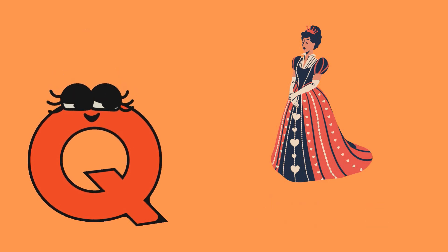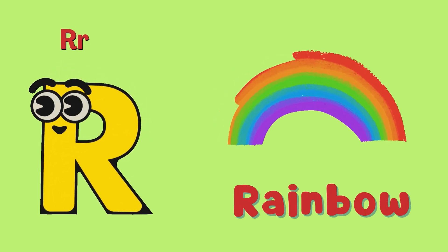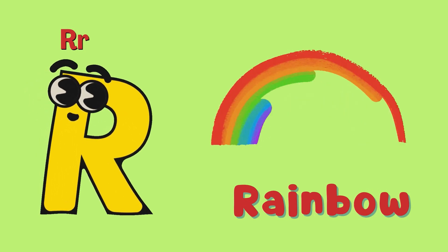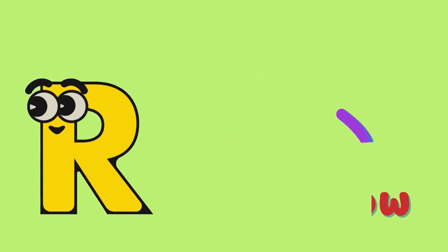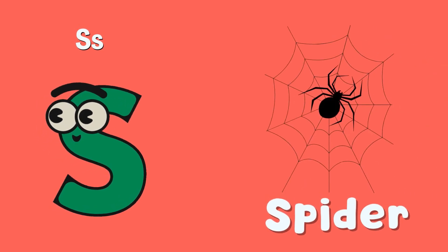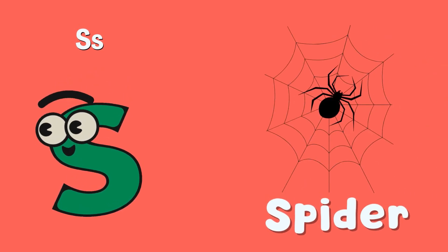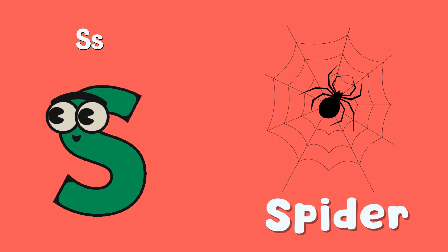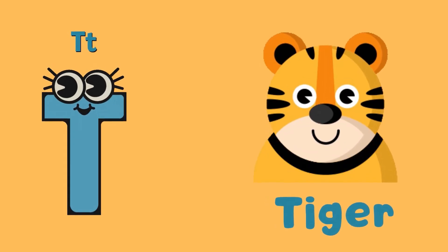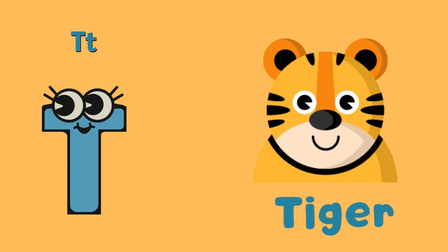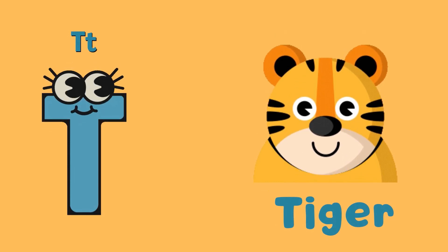R is for Rainbow. R-R-Rainbow. S is for Spider. S-S-Spider. T is for Tiger. T-T-Tiger.